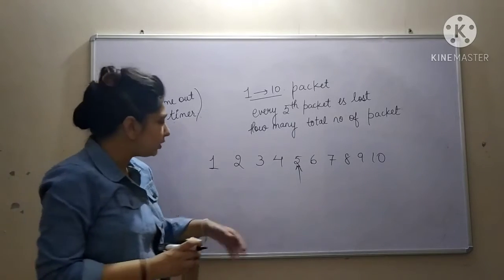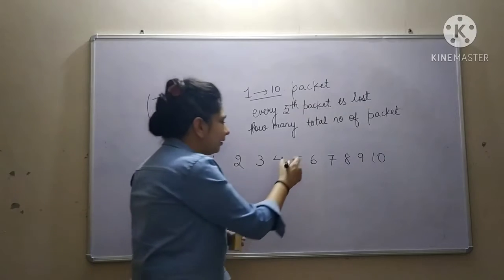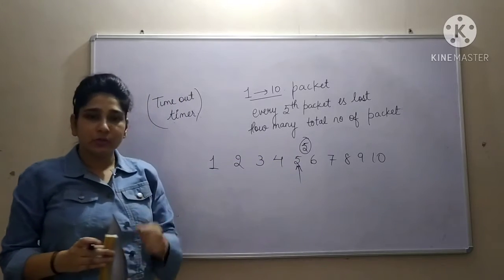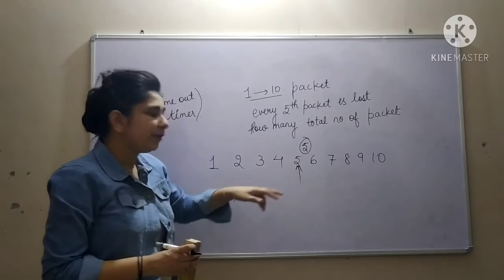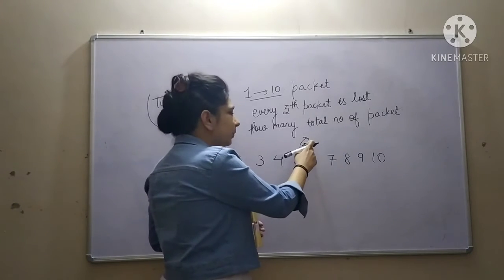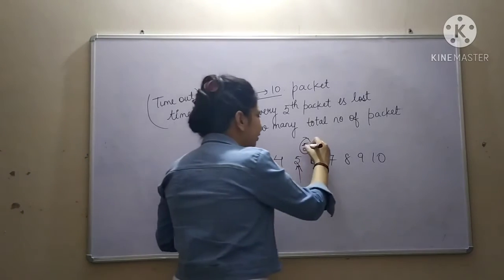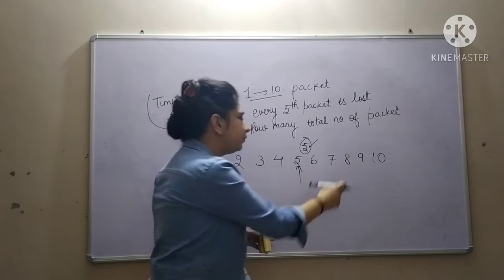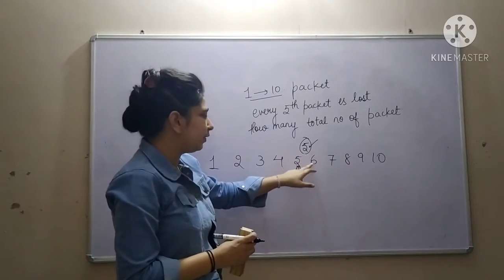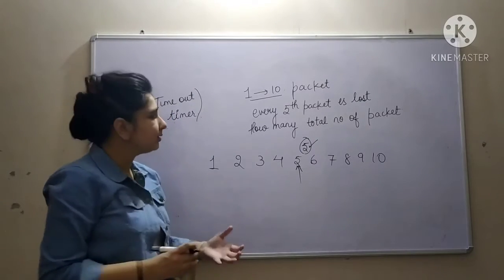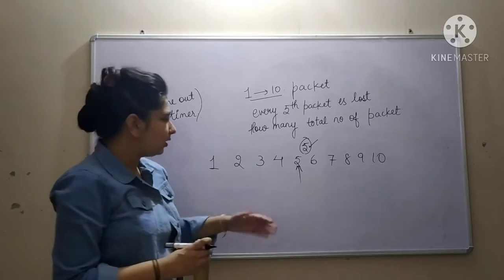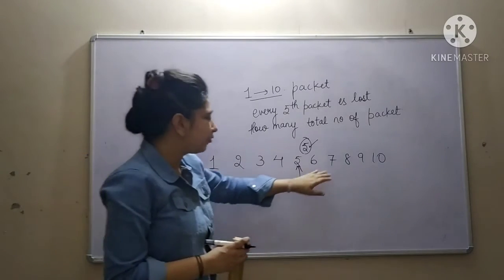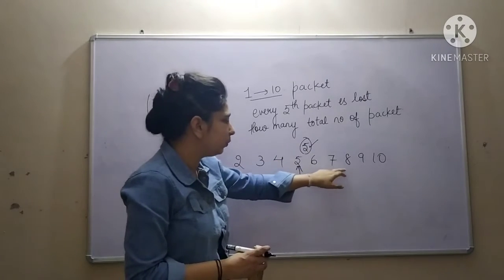So we have to retransmit packet number 5. I am again transmitting packet number 5 on the channel. Now every fifth packet is lost, so counting from here: 1, 2, 3, 4 — then packets 5 through 8 were transmitted. All four packets — 5th, 6th, 7th and 8th — were delivered successfully to the receiver, and we got acknowledgement within the timeout timer.